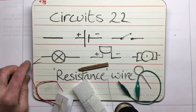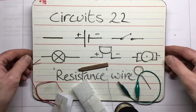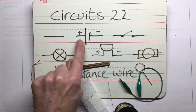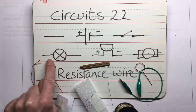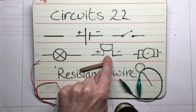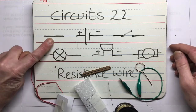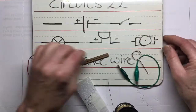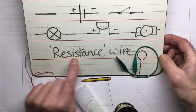We've mentioned lots of different components so far: conducting wire, cell or battery, switch, bulb or lamp, buzzer and motor. But let's go back right to the start with conducting wire and find out something about resistance.